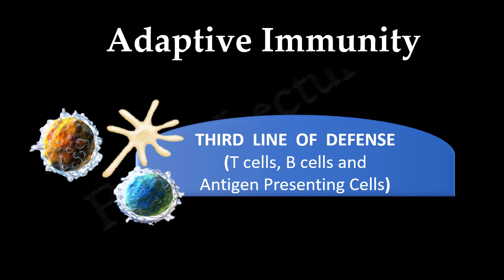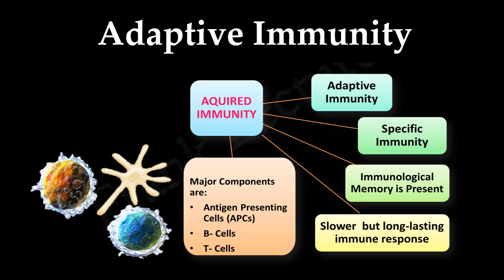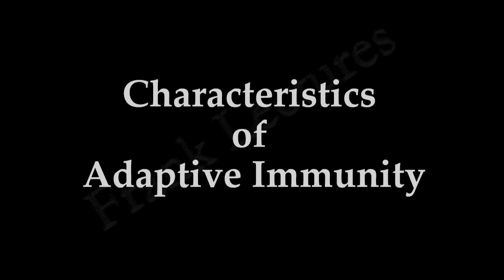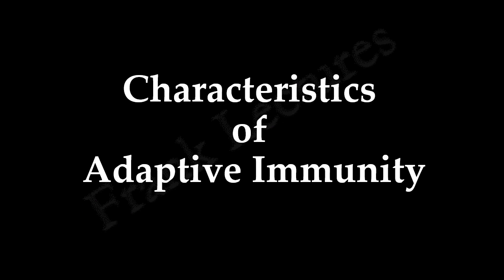The microbial invaders still have to face the third line of defense, which is known as adaptive immunity. Adaptive immunity is also known as acquired immunity. It is a more effective and specialized immune response against invading microbes. Unlike innate immunity, we are not born with it — it is acquired after birth through contact with pathogens during our lifetime. There are four main characteristics of adaptive immunity.